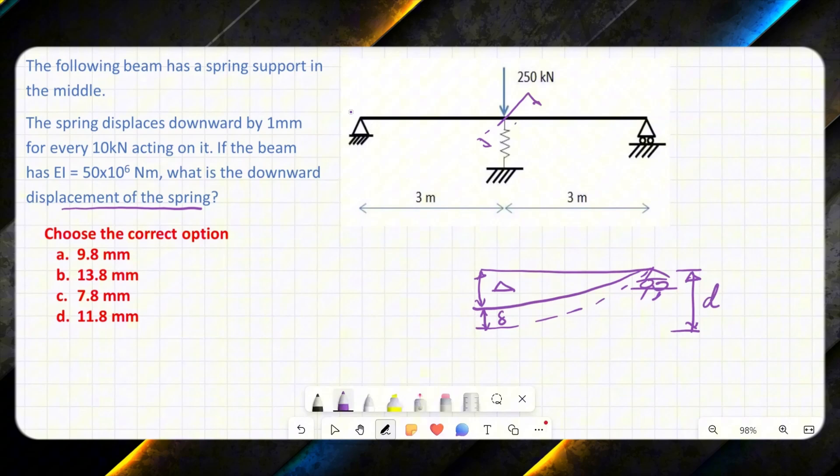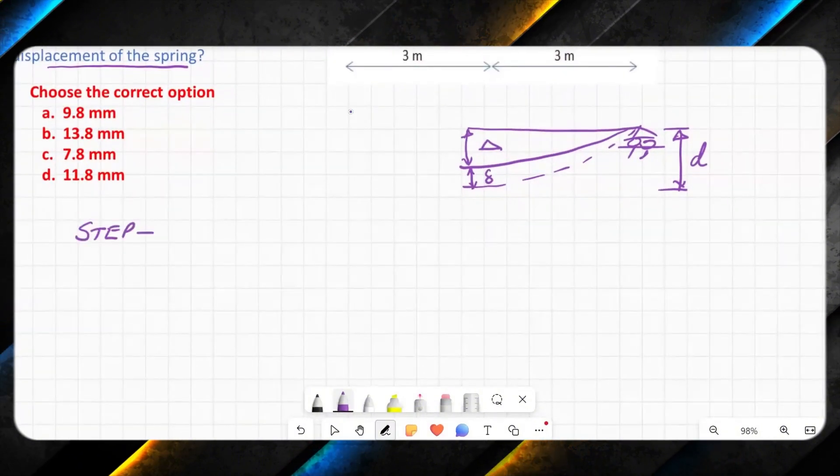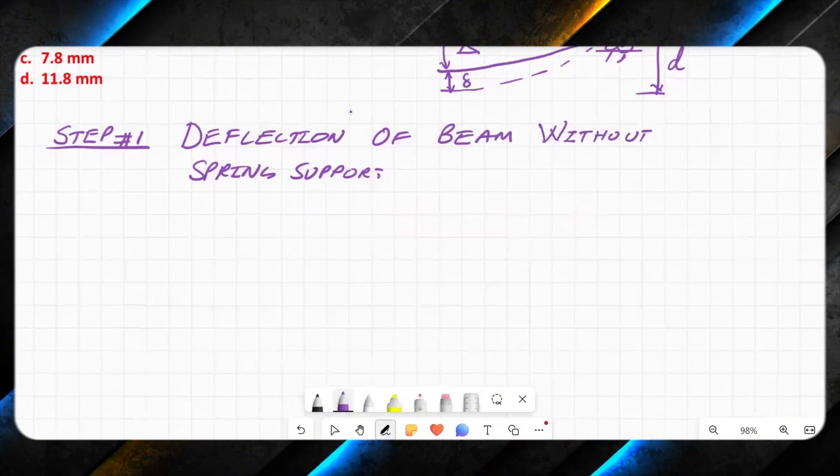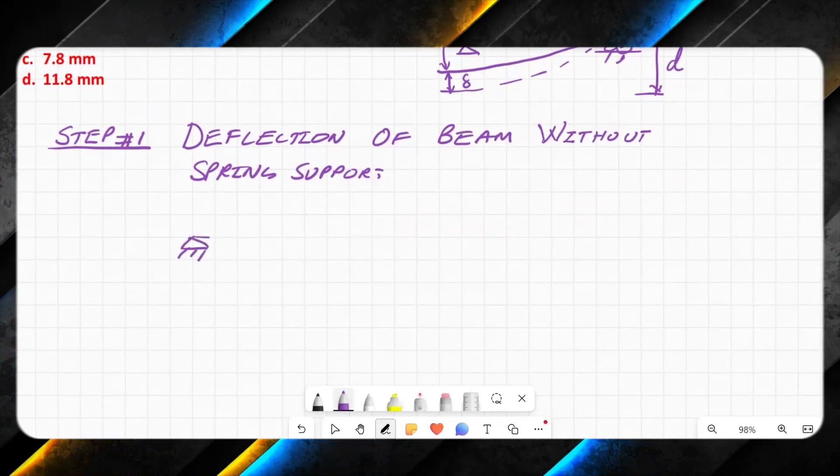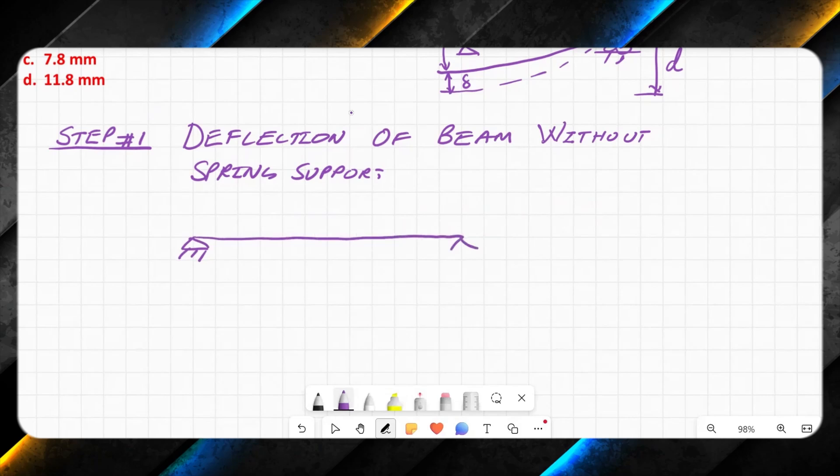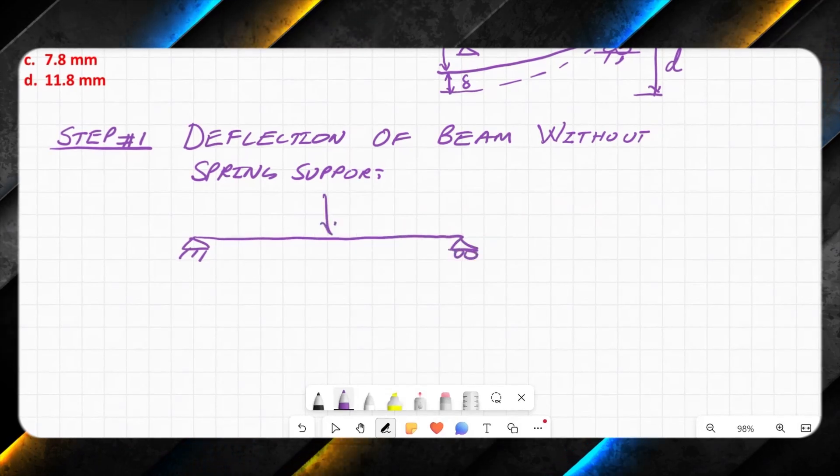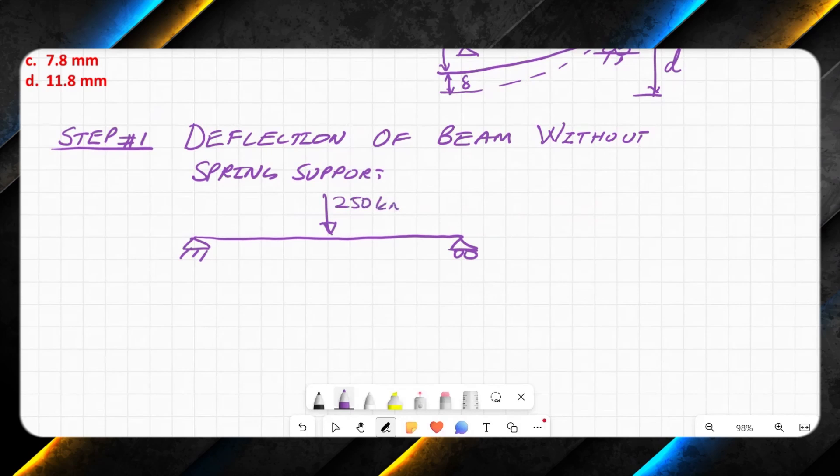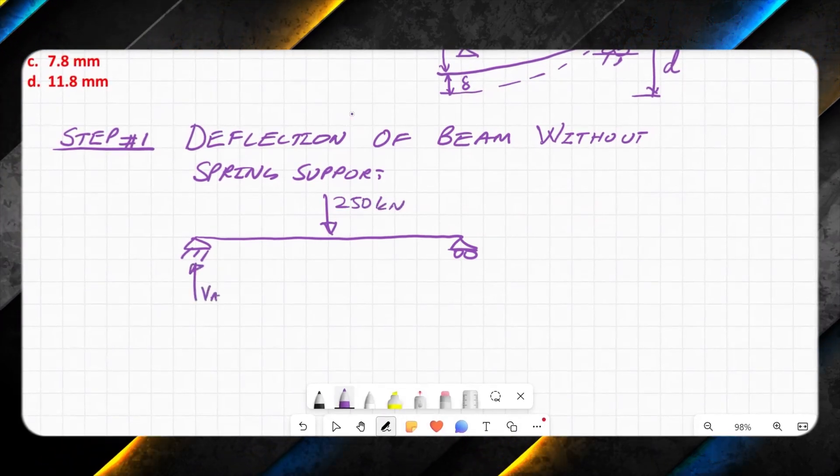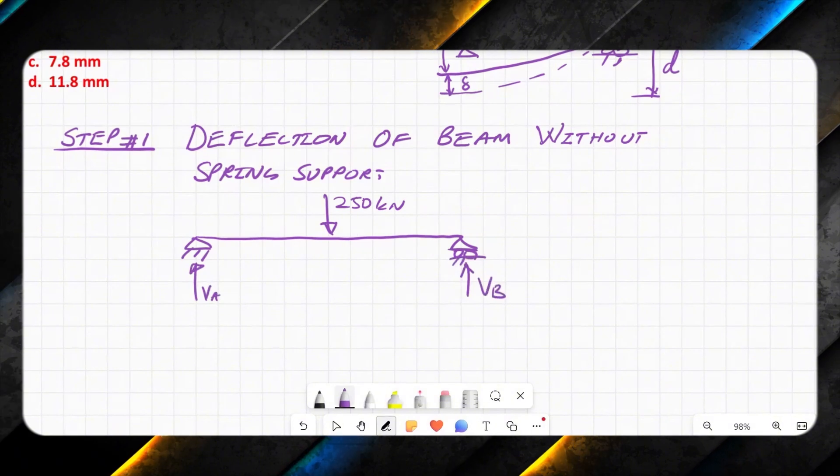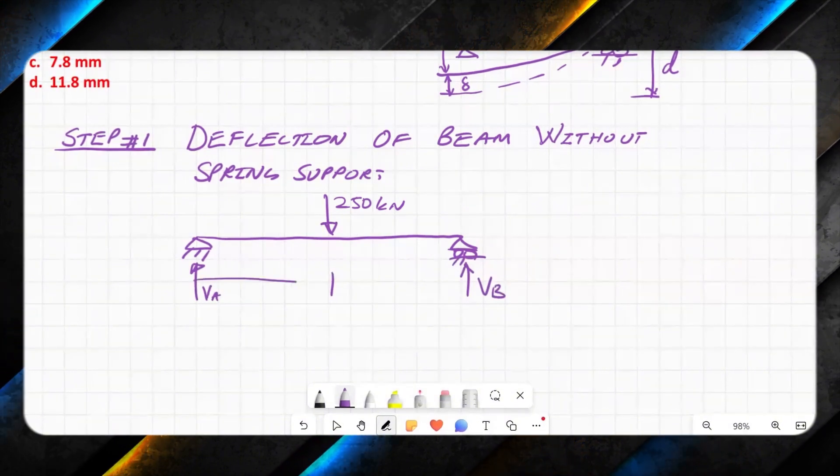When we want to find out deflection of beam without spring support, then we will draw the diagram of beam only. So the beam has 250 kN load and reactions are Va and Vb, and the distance is 3 meters and 3 meters.